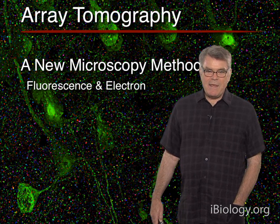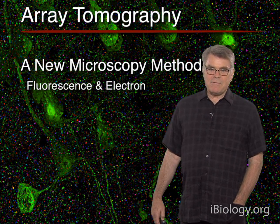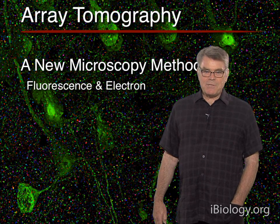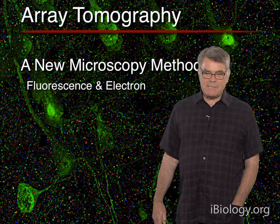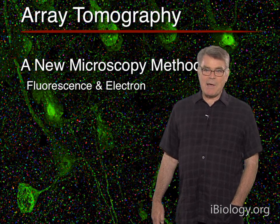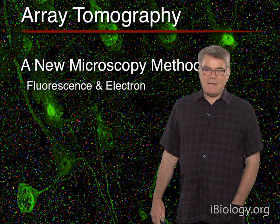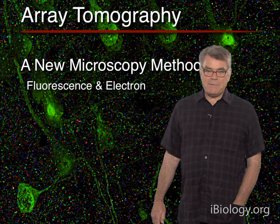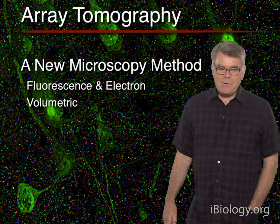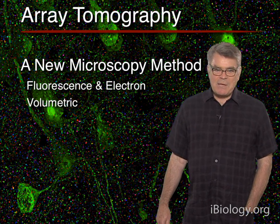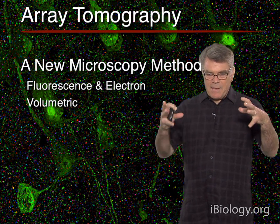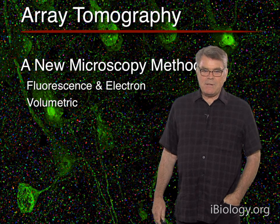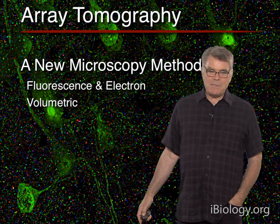So what is array tomography? It is a microscopy method that allows for combinations of fluorescence microscopy and electron microscopy. In my lecture today I am going to talk mainly about the fluorescence microscopy forms of array tomography, but I will give you a little taste of the electron microscopy capabilities and the way that the fluorescence and the electron microscopy can be used together. In both forms, array tomography is a volumetric imaging method — it lets you image a three-dimensional volume in a specimen in the form of a digital image representing three spatial dimensions.